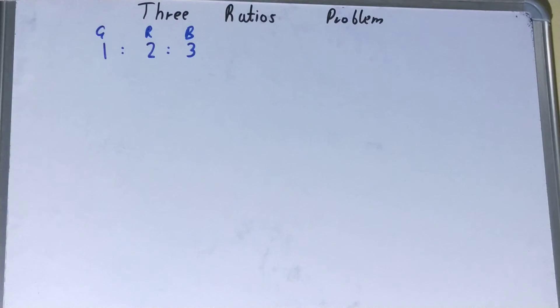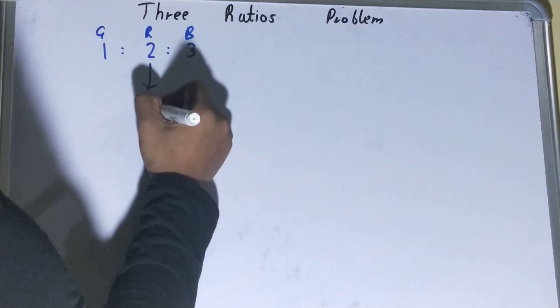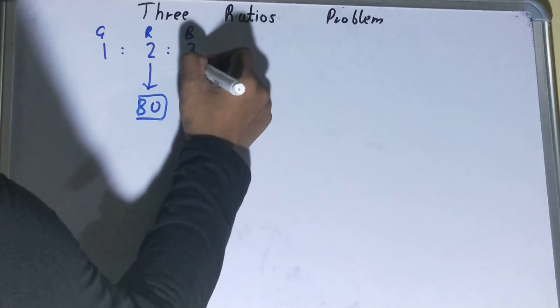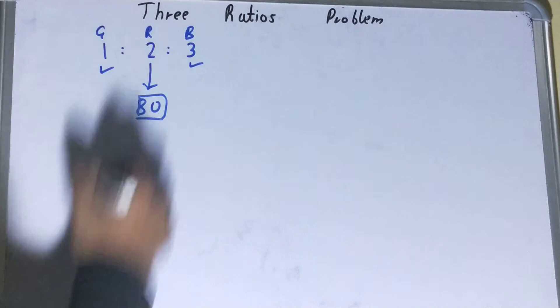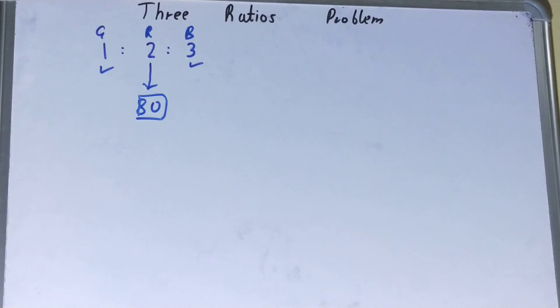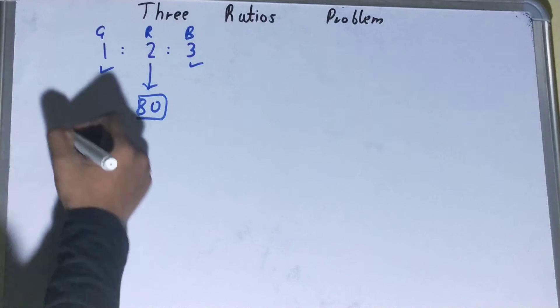And suppose you are given the value of red balls as 80. Then you need to find the blue balls and green balls in the bag. How would you do it? So I can write it as two parts.